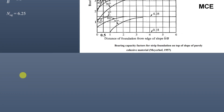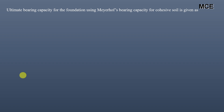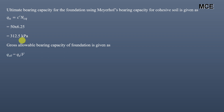The ultimate bearing capacity for the foundation on a purely cohesive soil at the top of a slope is given by: qu = c' × Ncq. With c' = 50 kPa and Ncq = 6.25, we get qu = 312.5 kPa. The gross allowable bearing capacity is then qu divided by the factor of safety: 312.5 / 3 = 104.2 kPa. This is the gross allowable bearing capacity for a foundation on purely cohesive soil at the top of a slope.